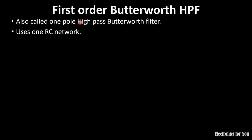In the case of simple filters, order and pole are the same concept. That's why first-order equals one pole. And as it is one pole or first-order, it means that it has one reactive component. In the case of a Butterworth filter, we can say that it uses only one RC component.